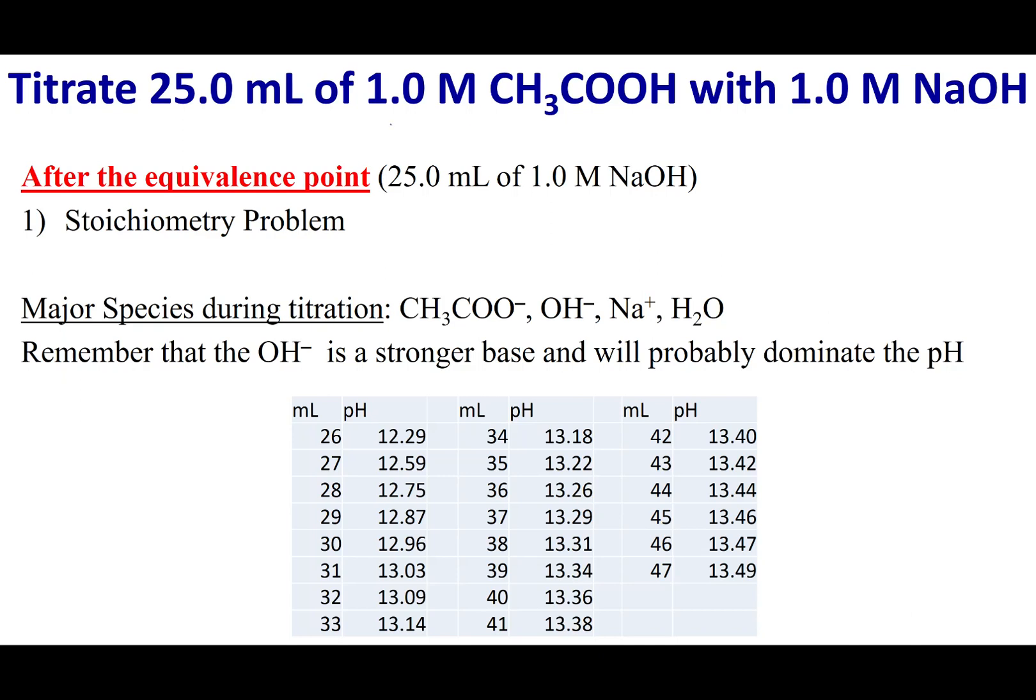We are titrating a weak acid with a strong base, and the parameters we've set up is that we have 25 mL of a 1 M solution of acetic acid, and we are titrating with 1 M NaOH. What we discussed before was before the equivalence point, at the equivalence point, and now in this video, we're going to talk about what happens after the equivalence point.